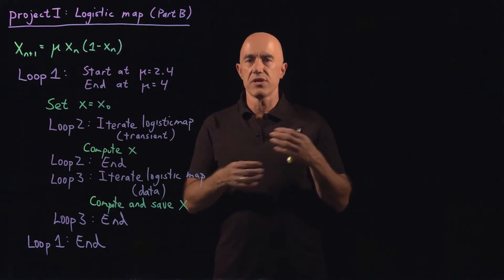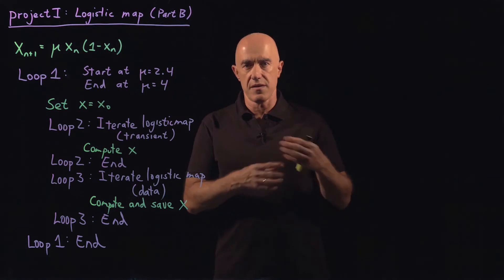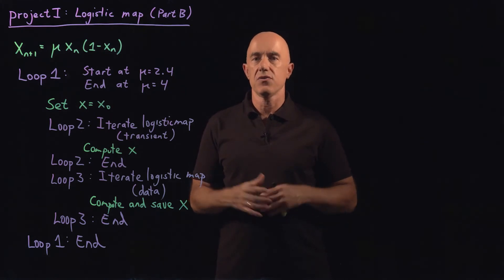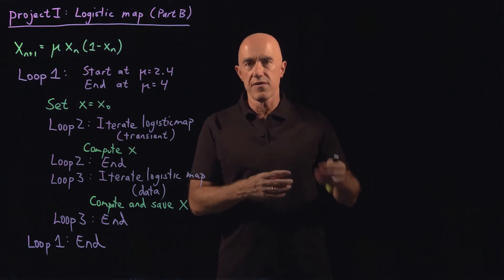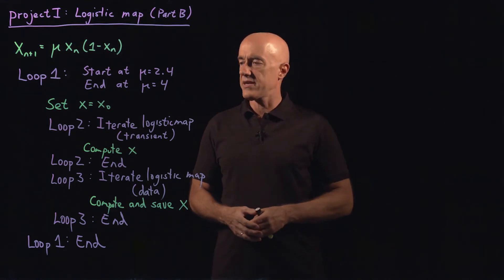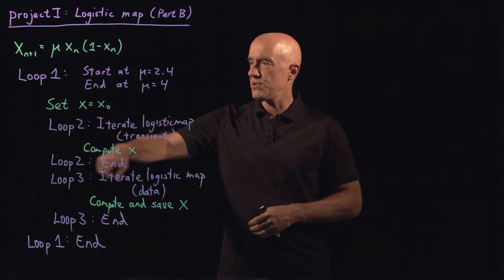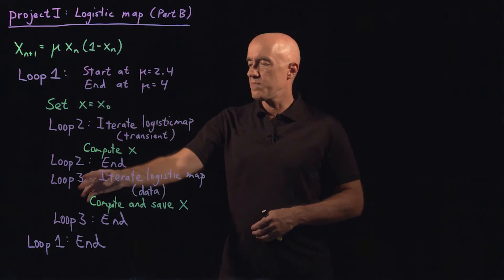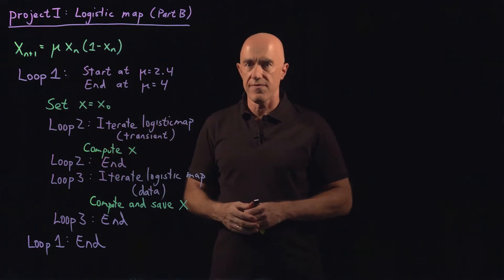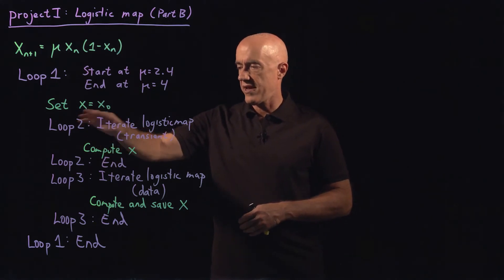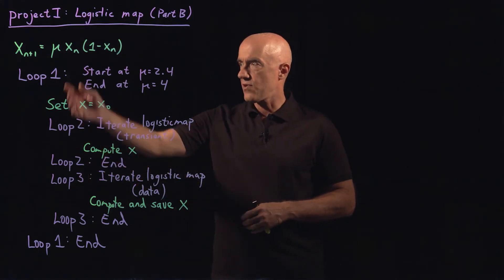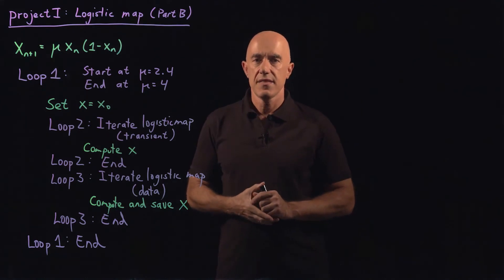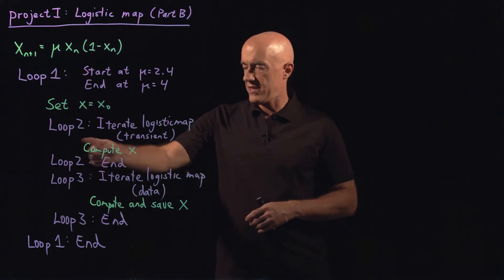If there's a fixed point, you get rid of the values of x until it converges to the fixed point. Or if it's a period-2 cycle or period-4 cycle, you get rid of the values that are not on the cycle. So you just iterate the map and throw them away. Then in loop 3, you start at the final value of x from iterating away the transient, further iterate the logistic map, and collect data — those are the values of x you'll plot on your bifurcation diagram.